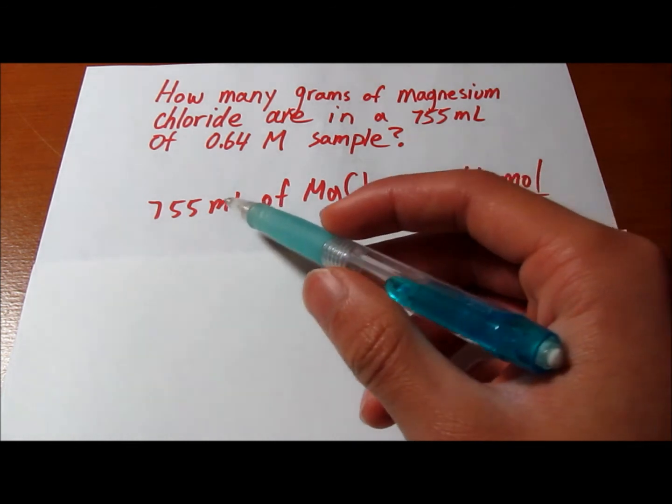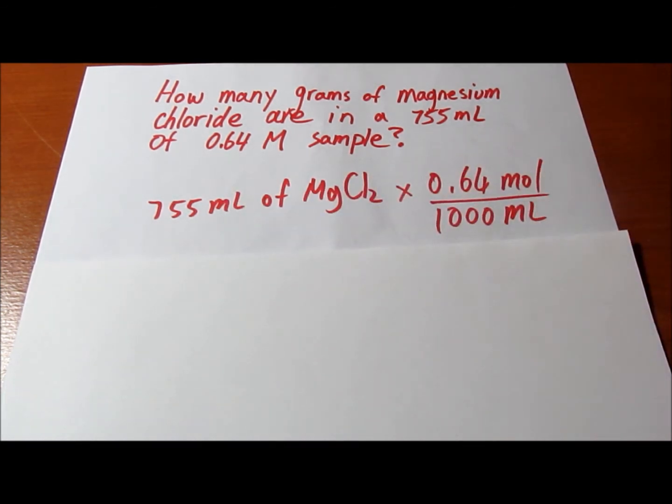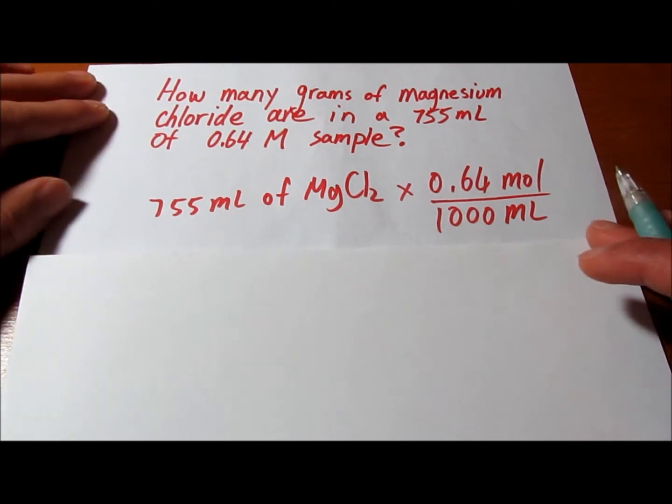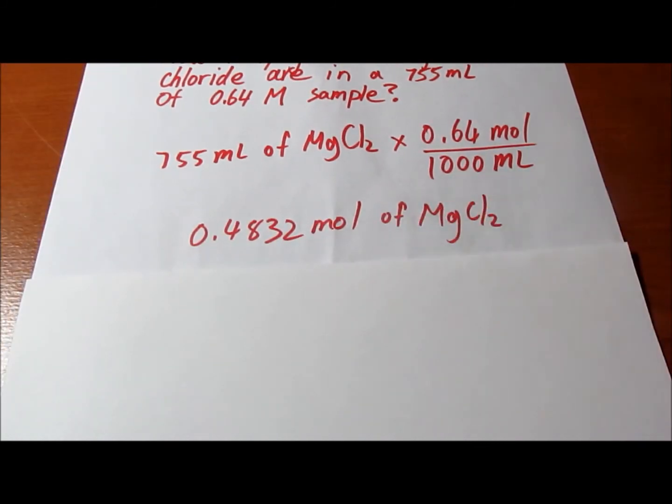Now we simply cross out the milliliters from each other and we would end up with the moles. And the answer would be 0.4832 mole of magnesium chloride.